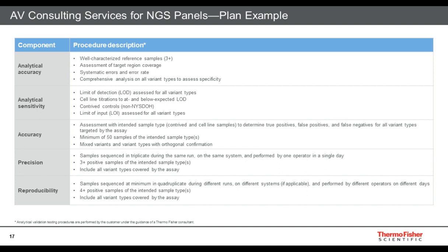We then segue into analytical sensitivity — assessing your limit of detection for all variant types. You'd also want to do a limited input study. For limit of detection, we typically use cell lines diluted in a background of normal DNA/RNA to target a variant allele frequency, copy number, or fusion reads depending on what the assay is designed to detect. Contrived controls can also be used — pre-diluted to target allele frequency, copy number, or fusion read counts — though New York State does not recommend contrived controls.